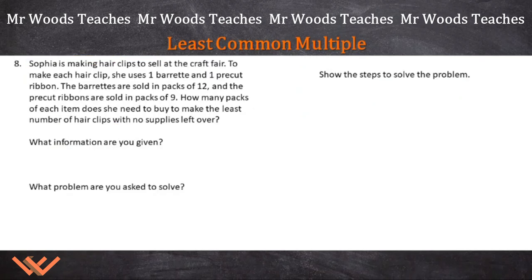Here's our next word problem. And many times, it's going to be where you're just going to be looking at it going, okay, I just need to find an answer. But wait, there's other types of word problems where it's multiple pieces that are being asked. Let's review this. Sophia is making hair clips to sell at the craft fair. To make each hair clip, she uses one barrette and one pre-cut ribbon. The barrettes are sold in packs of 12 and the pre-cut ribbons are sold in packs of nine. How many packs of each item does she need to buy to make the least number of hair clips with no supplies left over?